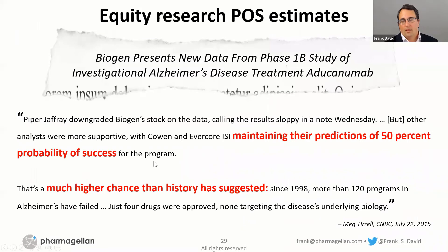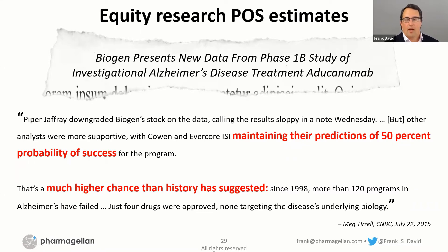And then, equity research estimates are always somewhat problematic. In general, the view of most people who are professionals within drug development is that equity research estimates tend to be over-permissive on probability of success.